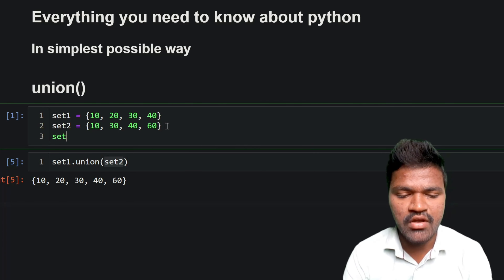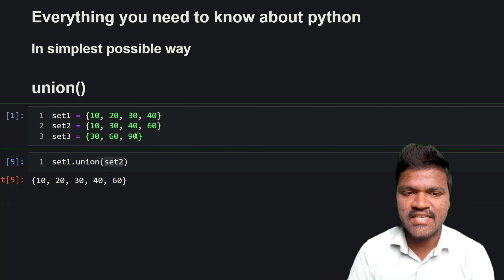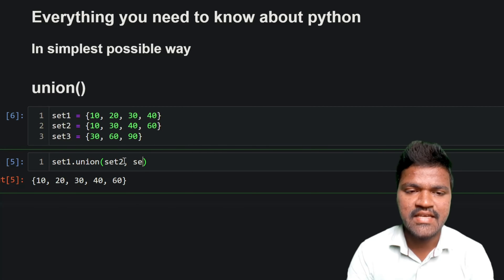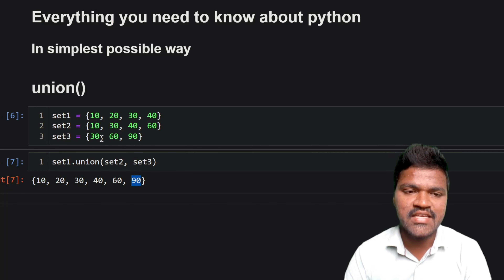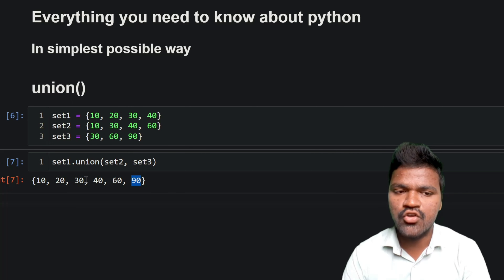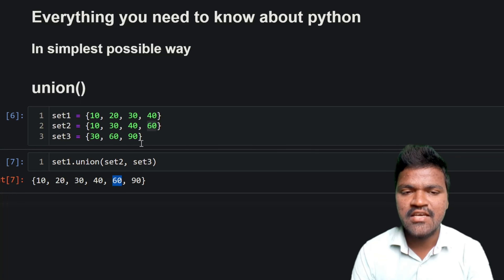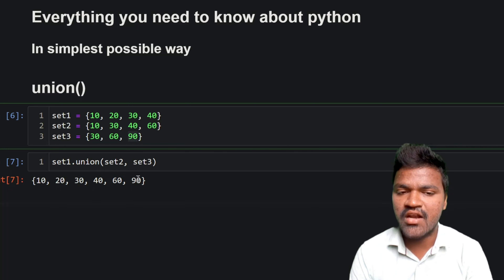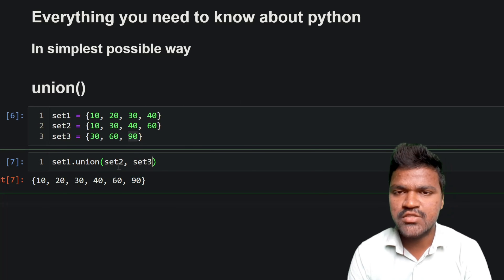To demonstrate this, I will be taking one more set — set3 — with elements 30, 60, and 90. After executing and passing set3 as a parameter to union, you can see we are getting 90 here. The value 30 is already present in all the sets, so set only keeps it once. Similarly 60 was already in set2. The only new element from set3 that was not in the previous sets is 90, which we are also getting.